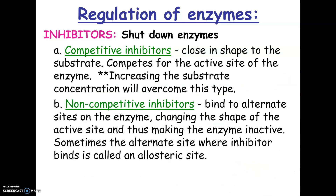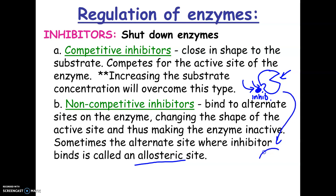The other type of inhibition is called non-competitive. Instead of the inhibitor competing for the active site, it binds to another spot on the enzyme — often called an allosteric site. So imagine my inhibitor binds to a little area back here on the enzyme, not the active site. When my inhibitor binds, notice how my active site has changed shape. Now my active site will no longer bind to substrates, so this enzyme is basically deactivated.